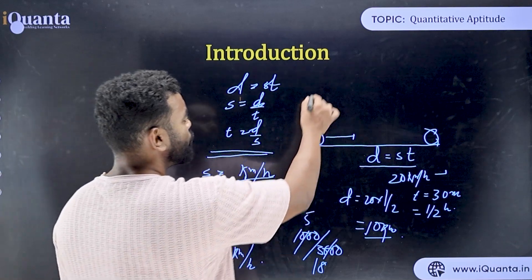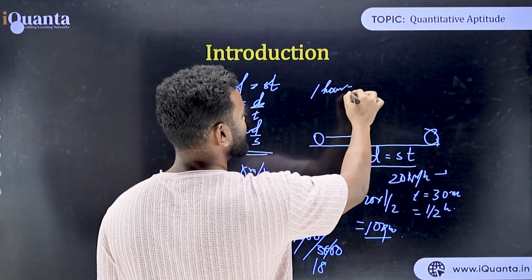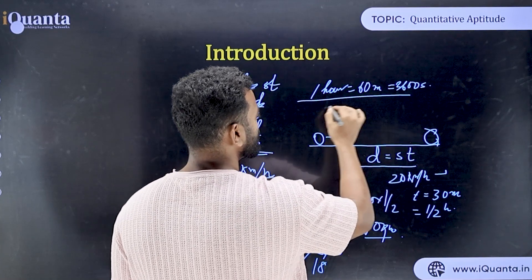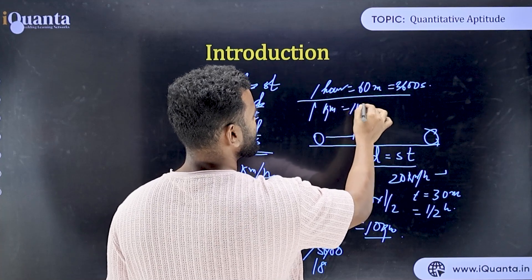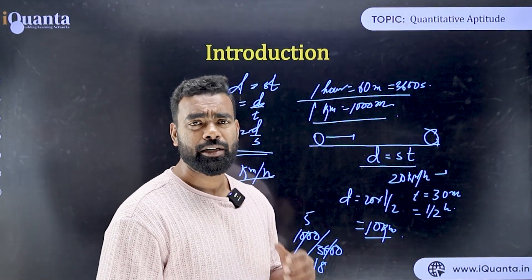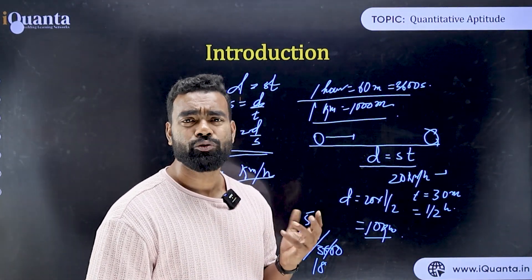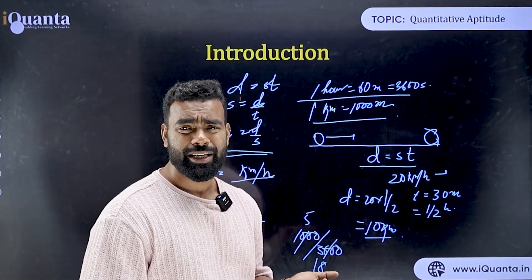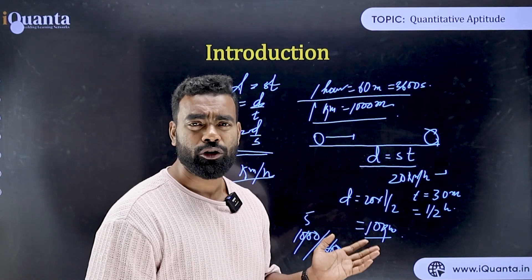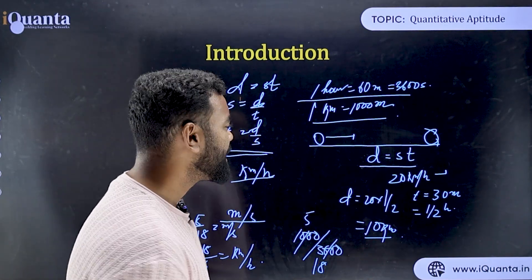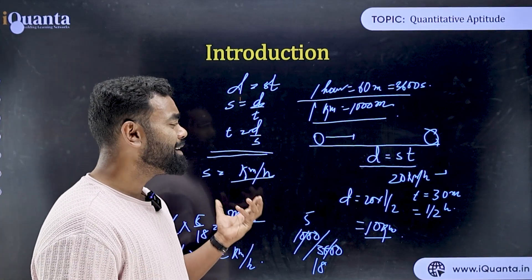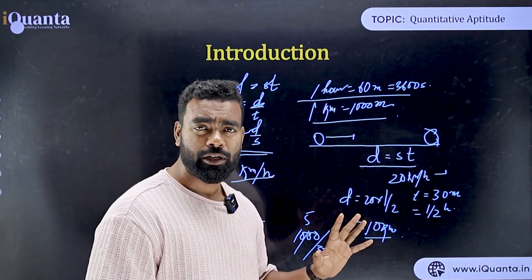Also remember: 1 hour = 60 minutes = 3600 seconds, and 1 kilometer = 1000 meters. In Indian exams, we generally use kilometers and hours — not miles or the FPS system. One mile is approximately 1.6 kilometers, but we generally won't use that.